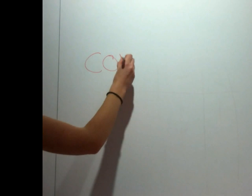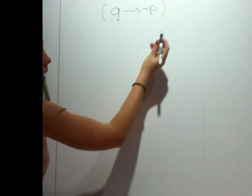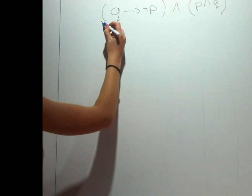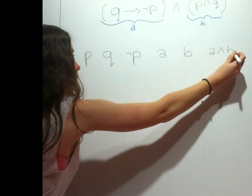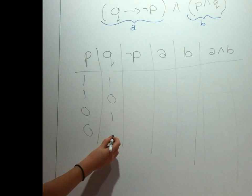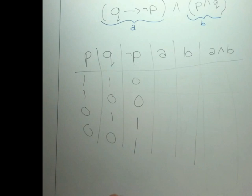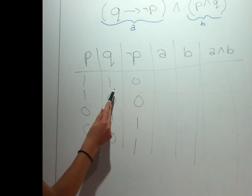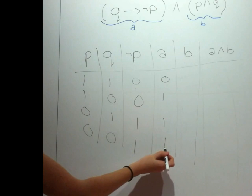Finally, let's talk about contradictions. A contradiction is when the statement is always false — it is the opposite of a tautology. Suppose we have an example: Q implies not P, and P and Q. We made Q implies not P equal to A, and we made P and Q equal to B. From the truth table, P equals true, true, false, false, and Q equals true, false, true, false. Because the negation of P is the opposite of P, the values are false, false, true, true. Looking at A: true implies false is false, false implies false is true, true implies true is true, and false implies true is true. If we look at B: true and true is true, true and false is false, false and true is false, and false and false is false.